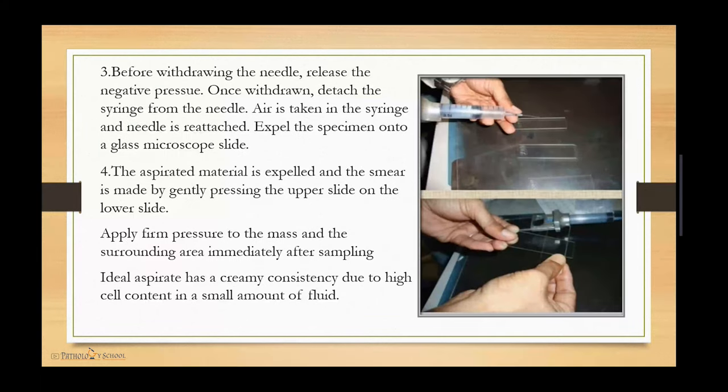Before withdrawing the needle, it is essential to release the negative pressure. Once withdrawn, detach the syringe from the needle, draw air into the syringe, reattach the needle, and expel the specimen onto a glass microscope slide. The smear is made by gently pressing the upper slide on the lower slide. Firm pressure is then applied to the mass and surrounding area. The ideal aspirate has a creamy consistency due to high cell content in a small amount of fluid.